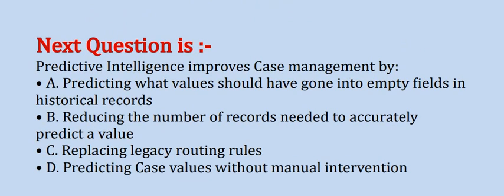Predictive intelligence improves case management by — Option A, predicting what values should have gone into empty fields in historical records; Option B, reducing the number of records needed to accurately predict a value; Option C, replacing legacy routing rules; Option D, predicting case values without manual intervention. The correct option is Option D.